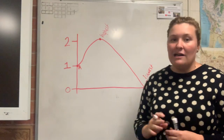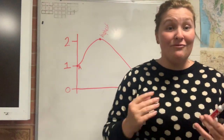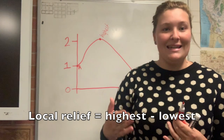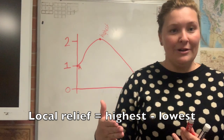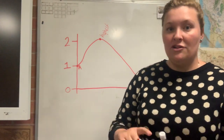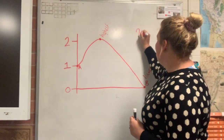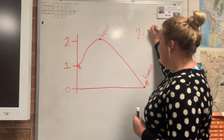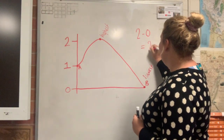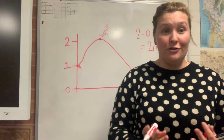Now that we've worked out our highest point versus our lowest point, we use a really simple formula: local relief equals highest point minus lowest point. So here all we need to do is two minus zero, which gives us a local relief of two meters.